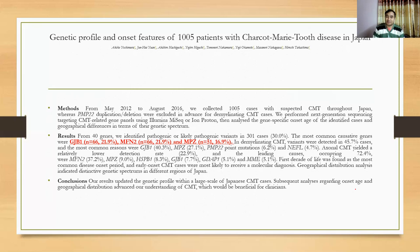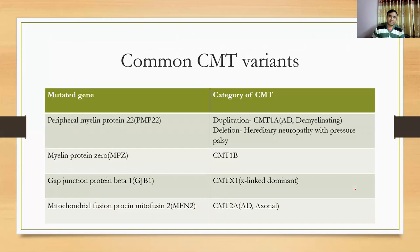The common CMT variants and their causative genes are: peripheral myelin protein 22 (PMP22) — duplication causes CMT1A and deletion causes hereditary neuropathy with pressure palsy; myelin protein zero (MPZ) causes CMT1B; gap junction protein beta (GJB1) causes CMTX; and mitochondrial fusion protein mitofusin (MFN2) causes CMT2A.